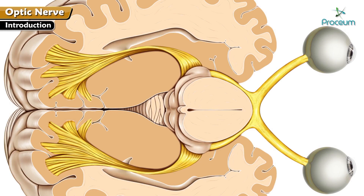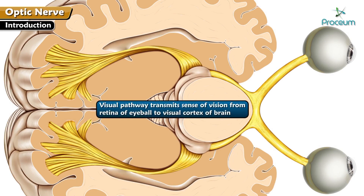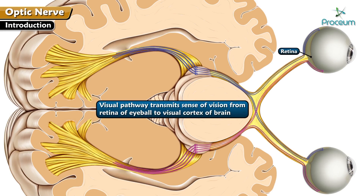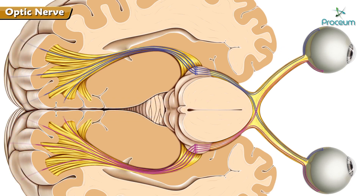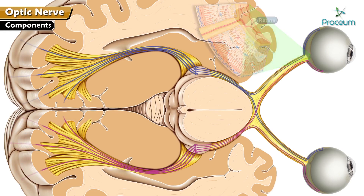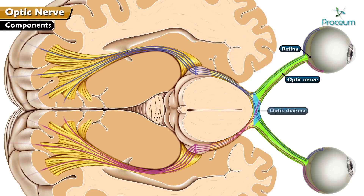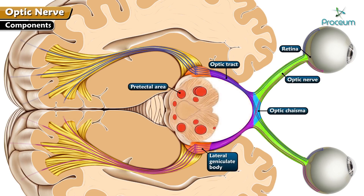Introduction. Vision is an important special sense in humans. The visual pathway transmits the sense of vision from the retina of the eyeball to the visual cortex of the brain. The components of the visual pathway include the following structures: the retina, optic nerve, optic chiasma, optic tract, lateral geniculate body, pre-tectile area, superior colliculi, optic radiation, and visual cortex.